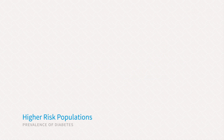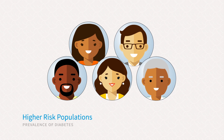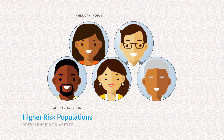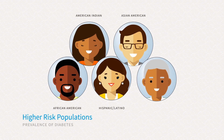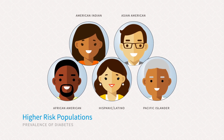Certain populations are at higher risk for type 2 diabetes when compared to others. We see a higher frequency of diagnosis in African American, American Indian, Hispanic Latino, Asian American, and Pacific Islander populations.